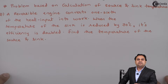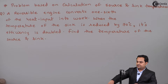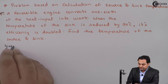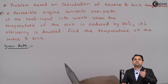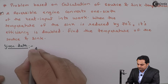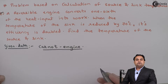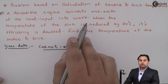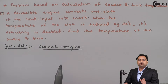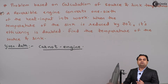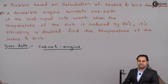Hello friends. In this video we will see a problem in which we have to calculate source and sink temperatures. In the given data, the first thing is a reversible engine — we can take it as a Carnot engine. The Carnot engine converts one-sixth of the heat input into work. This Carnot engine is converting whatever heat is given, and one-sixth of that amount is being converted into work. In other words, this is the efficiency of the Carnot cycle.